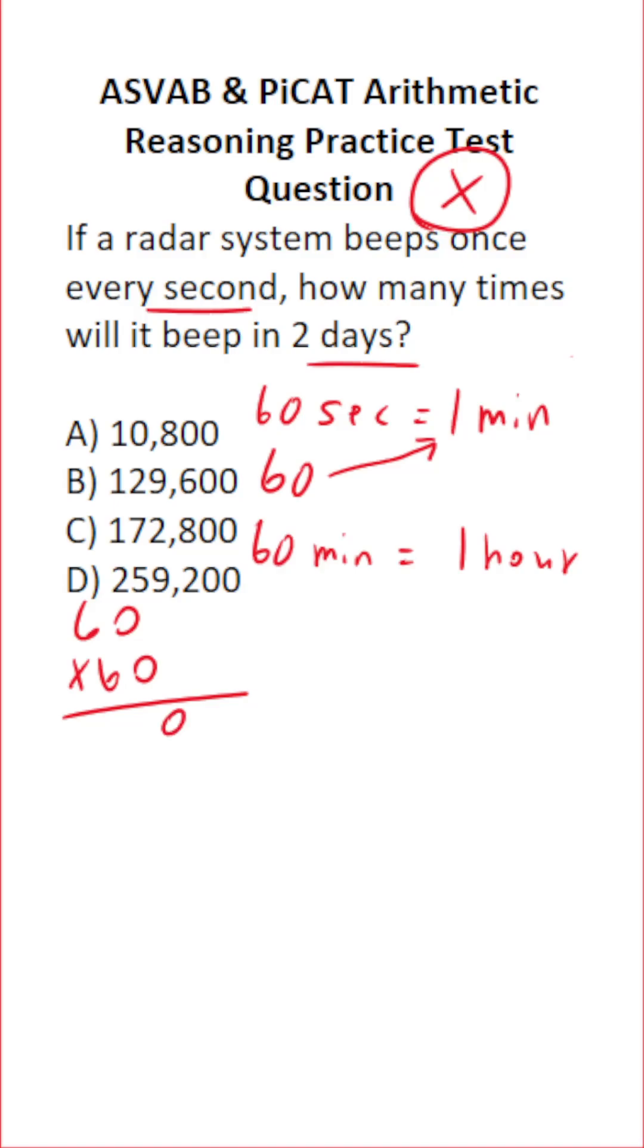Zero times zero is zero. Zero times six is zero. Before we start multiplication with this six, bring in a zero placeholder. Six times zero is zero. Six times six is 36. Let's add this all up. This is 3,600. So this radar system is beeping 3,600 times per hour.